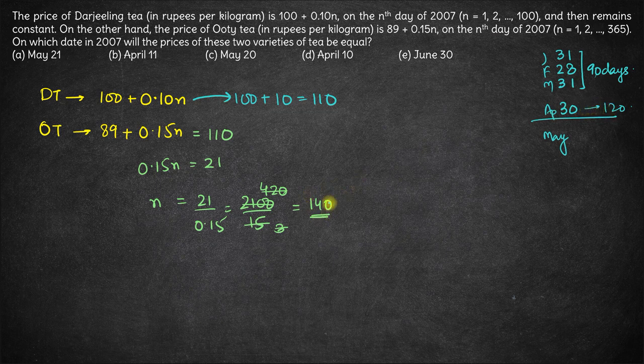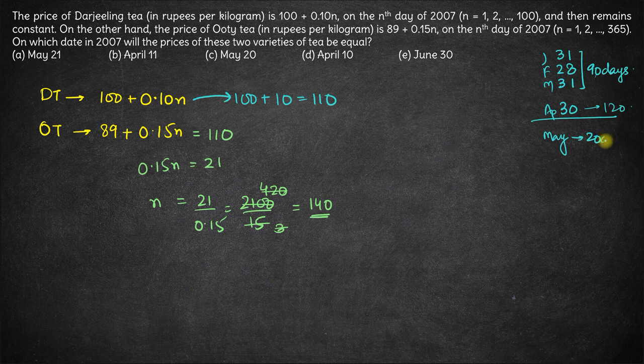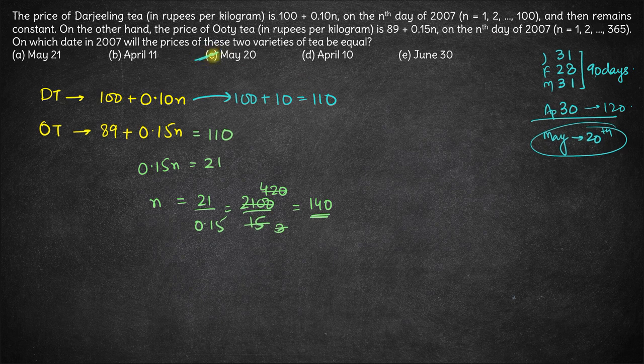We need to account for 20 more days. 120 days are done till April, so we need 20 more days in May. 20 days in May will be May 20th. The correct answer is option C. On May 20th, the prices will be the same for both the teas.